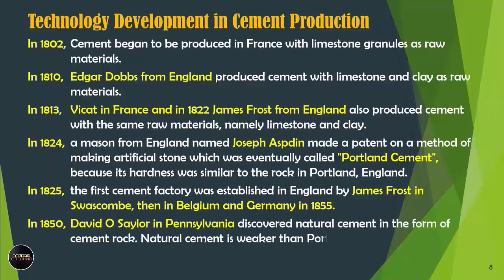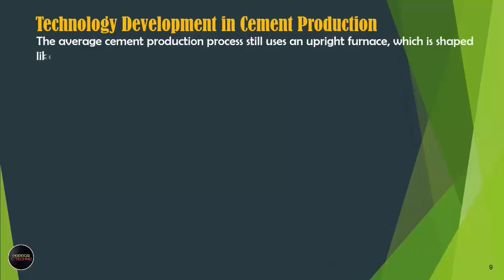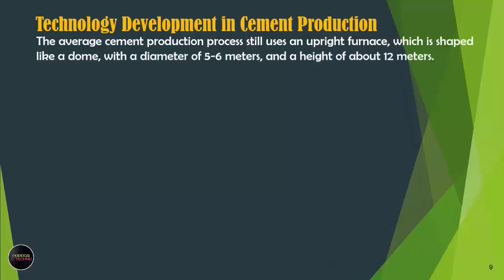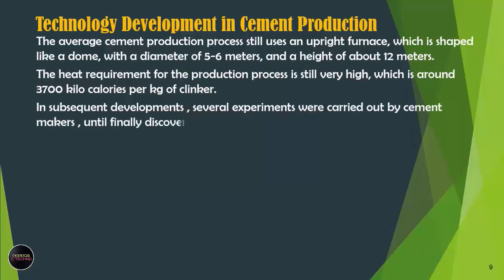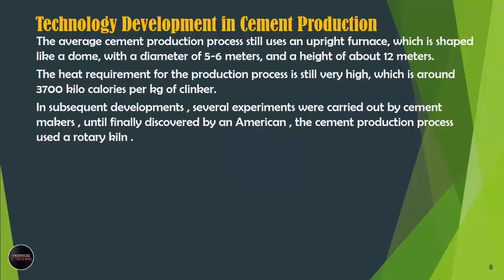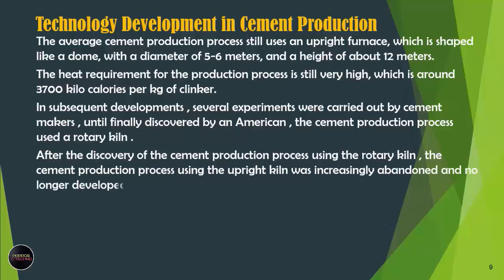In 1850, David O. Saylor in Pennsylvania discovered natural cement in the form of cement rock. Natural cement is weaker than Portland cement, but still stronger than hydraulic cement. The average cement production process at this time still used a shaft kiln, shaped like a dome with a diameter of 5 to 6 meters and a height of about 12 meters. The heat requirement for the production process was still very high, around 3,700 kilocalories per kilogram of clinker. Several experiments were carried out by cement makers until finally an American discovered the cement production process using a rotary kiln, after which the shaft kiln was increasingly abandoned and no longer developed.